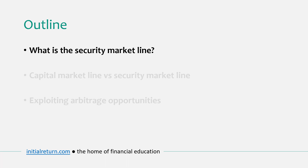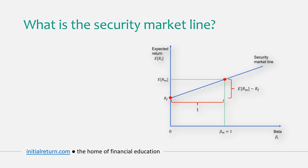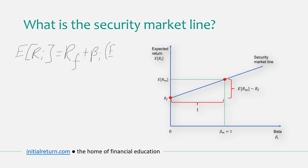So what is the security market line? It is in fact just the visual representation of the CAPM equation. To understand the SML we need to recall the CAPM formula. The CAPM formula says that the expected return on a risky asset i depends on the risk-free rate of return plus the beta of that asset multiplied by the market risk premium. This is a linear relationship between expected return and beta, and that's exactly what the security market line depicts.